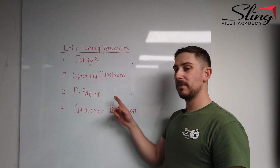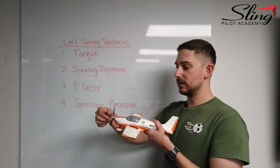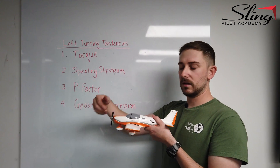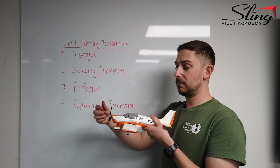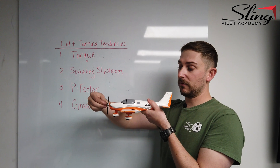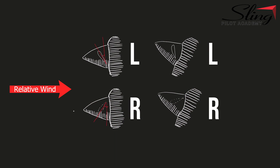Number three is P-factor. P-factor is the difference in blade angles relative to the relative wind. Simply put, when you're flying straight and level, the descending blade to your right and the ascending blade to your left both have the same effect — the angle of attack to the relative wind stays the same.